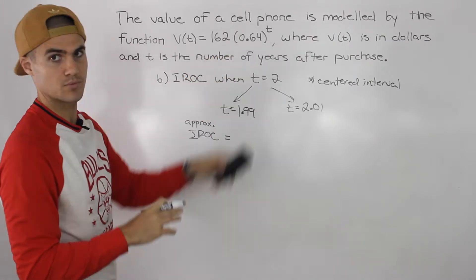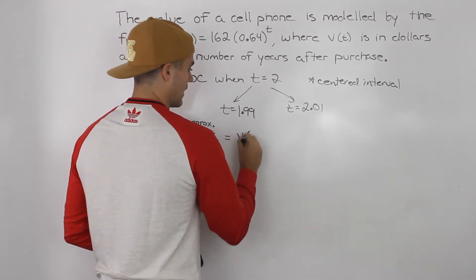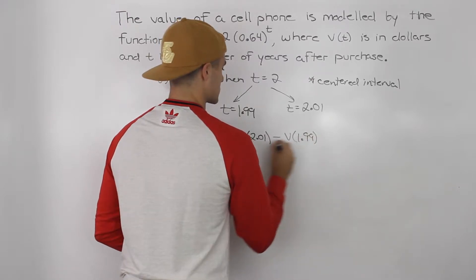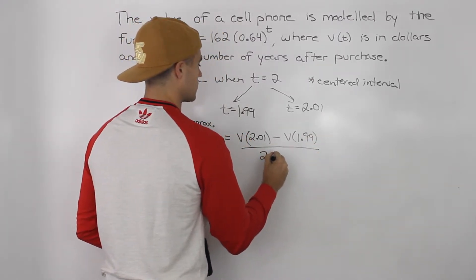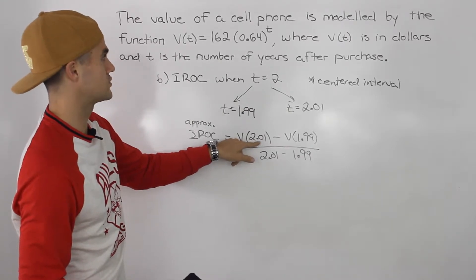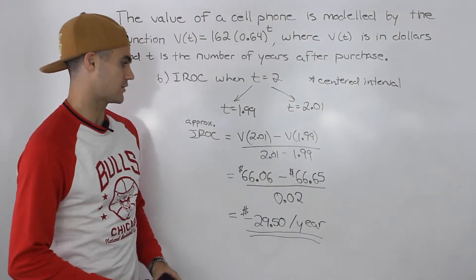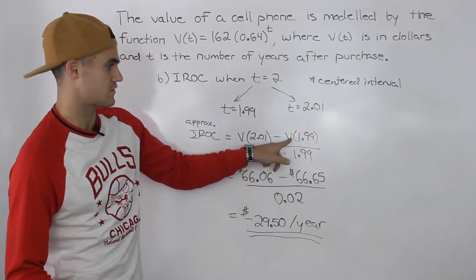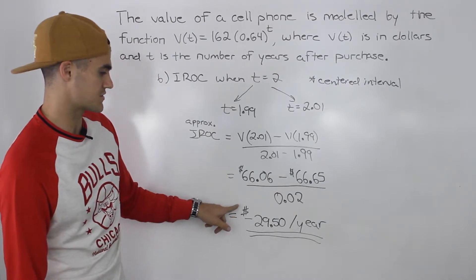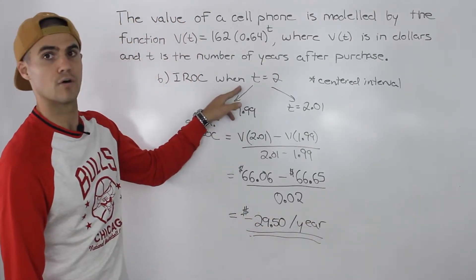Unfortunately, with exponential functions we don't know how to use the difference quotient with that type of function, so we do it this way. We find the value of the phone at 2.01 years, subtract the value at 1.99 years, and the denominator is 2.01 minus 1.99. V(2.01) is 66.06, V(1.99) is 66.65, and the denominator is 0.02. Simplifying that, you get approximately negative $29.50 per year — that's the approximate instantaneous rate of change when the phone is two years old.